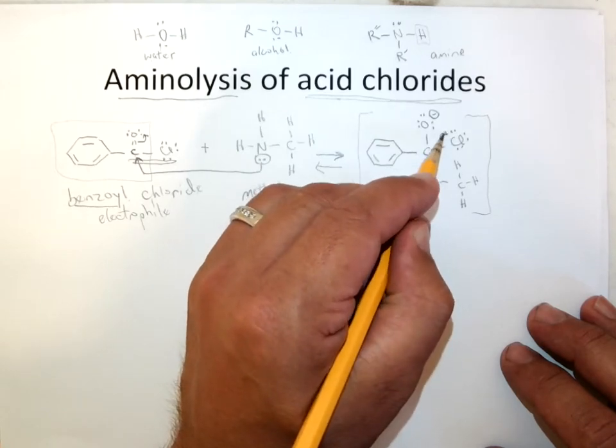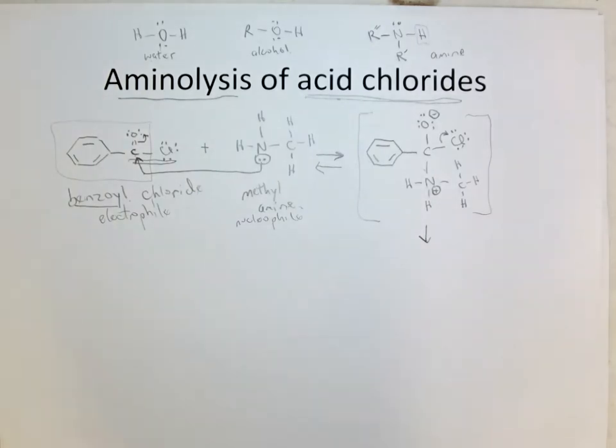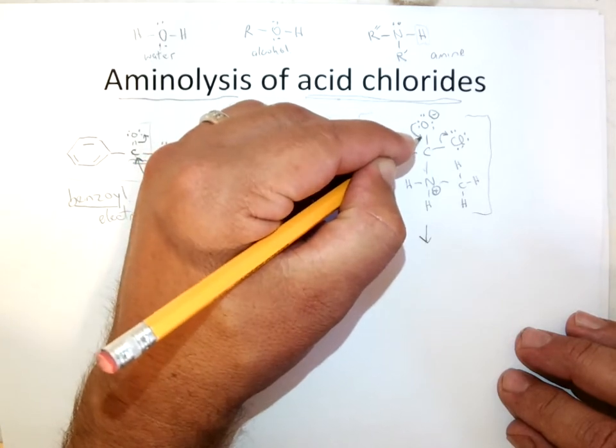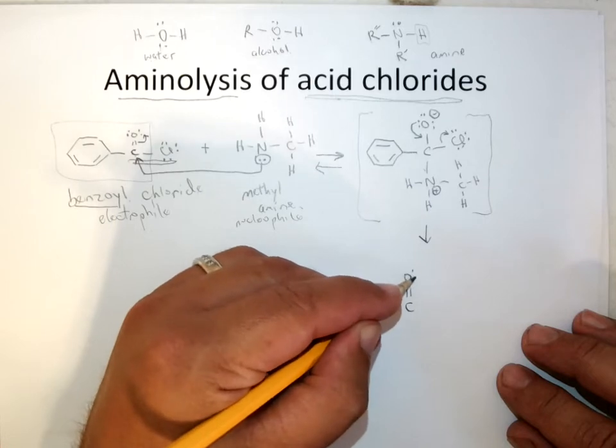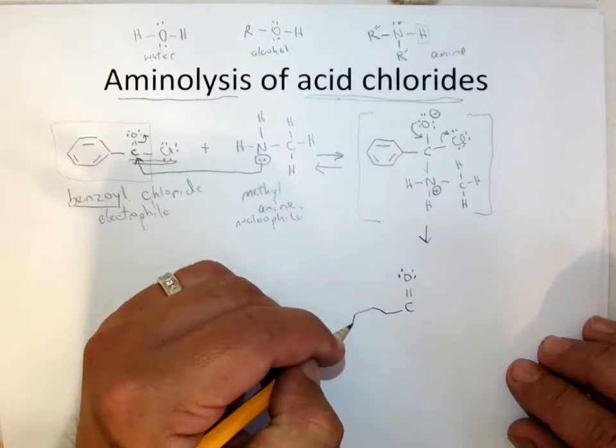So after you get this tetrahedral intermediate, the chloride becomes the leaving group. And it leaves. And then this lone pair can move back in and reform the pi bond. So just like the other reactions we studied, you regenerate the carbonyl.